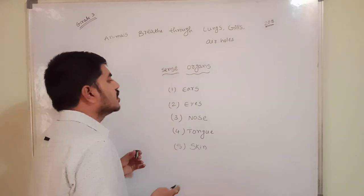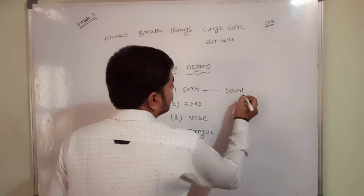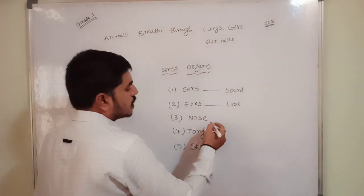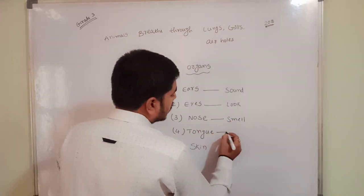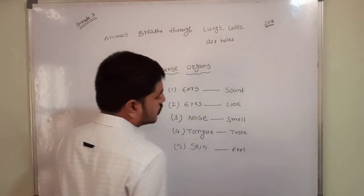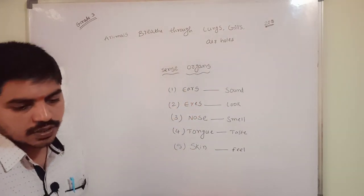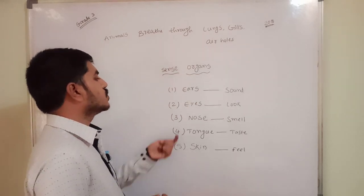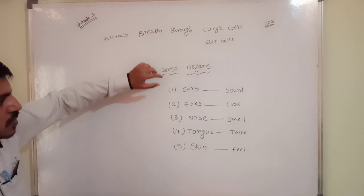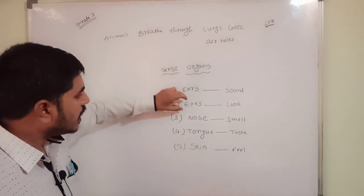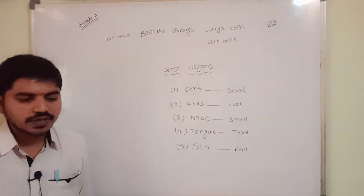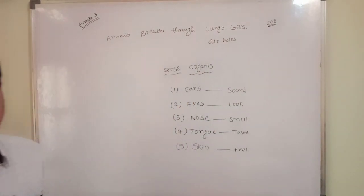Ears receive sound, eyes are for looking, nose is for smell, tongue is for taste, and skin is useful for feeling — such as feeling cool or warm. These are the five sense organs present in our day-to-day life.